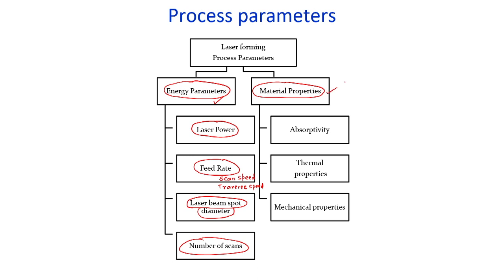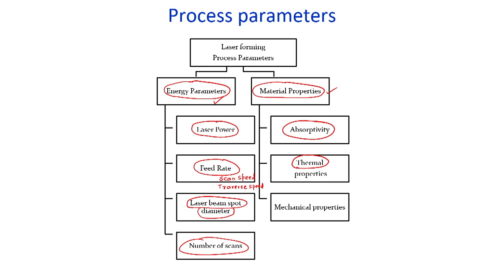As far as material properties are concerned, absorptivity is essential when developing or computing laser-based forming systems. Thermal properties such as thermal conductivity and specific heat must also be considered. The mechanical strength of the material also affects the laser beam bending process. Additionally, material geometry parameters — most prominently the thickness — are also influential.